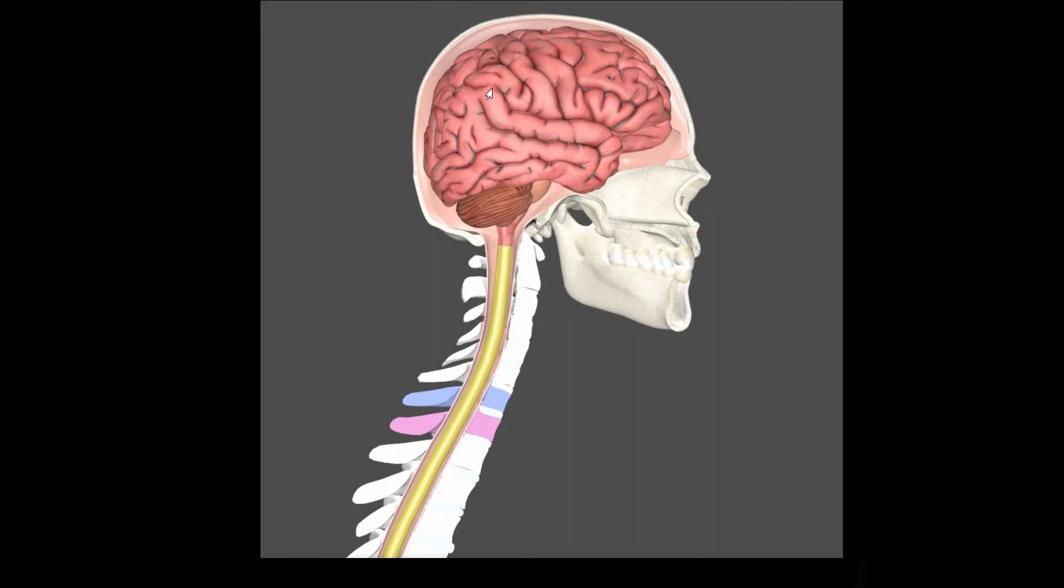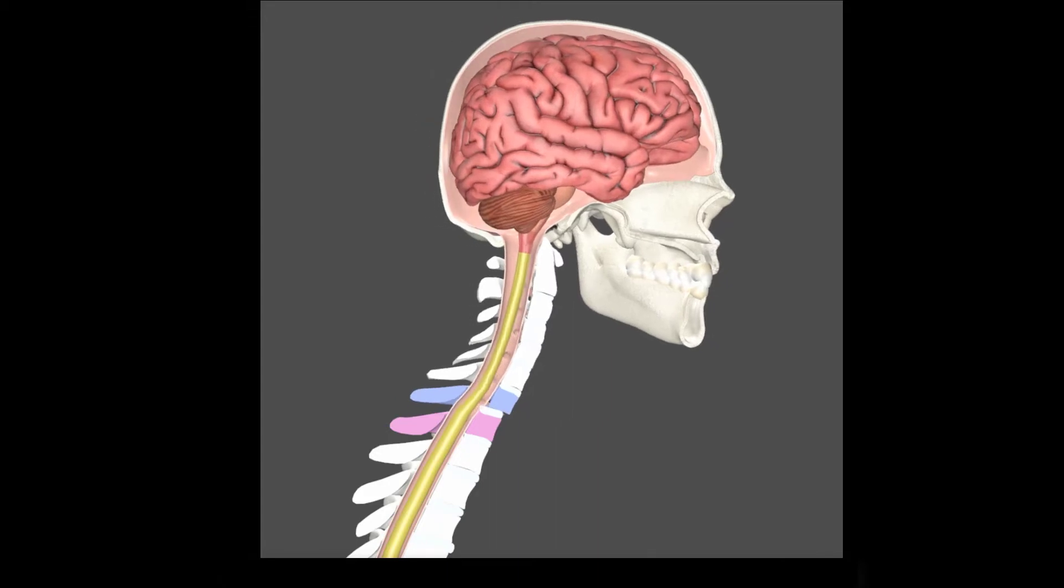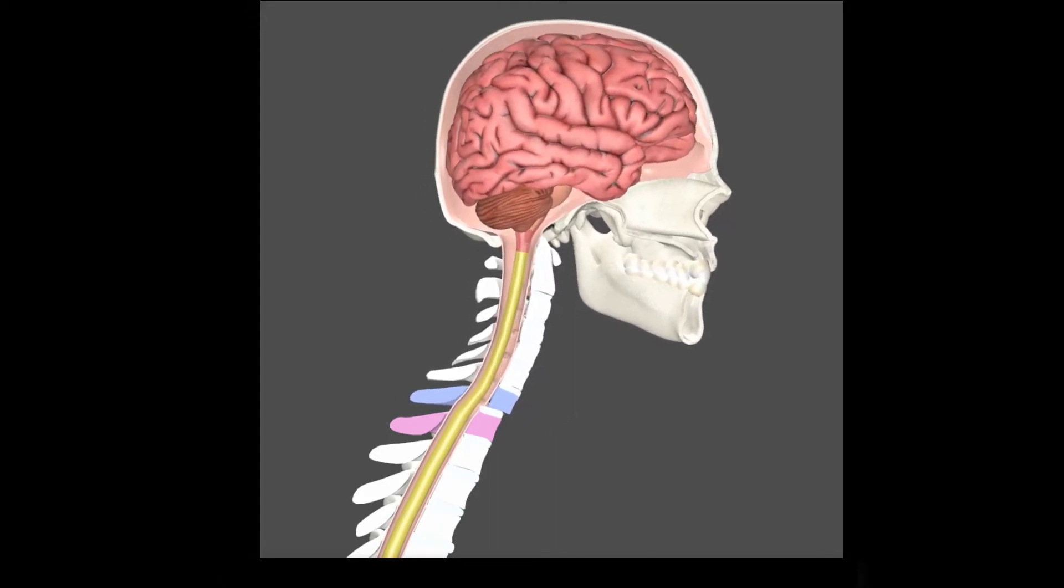Now, does a blow from the back or from the front cause that to go forward? Well, both of them will cause that to go forward. If you get hit from the back, obviously, you can push all of these forward, including C7. So that can do it. But if you get hit from the front and your head goes backwards, that causes a leveraging effect, which will push this thing forward as well.